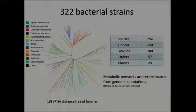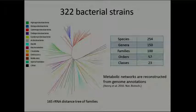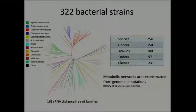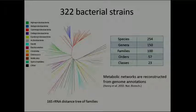We collected metabolic network models for 322 bacterial strains represented in a phylogenetic tree based on the 16S ribosomal RNA gene. The colors in the tree represent different taxonomic classes, and we're looking at very diverse bacteria: about 100 families and 254 species, including several strains per species. Because these species have had their genomes sequenced, we used a computational pipeline developed by Chris Henry to build the metabolic network models and predict phenotypes.